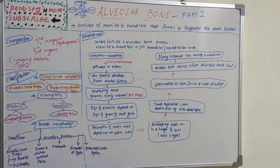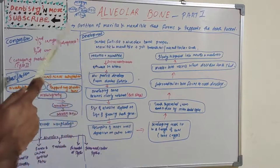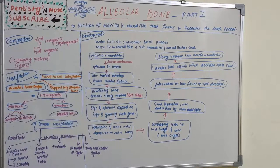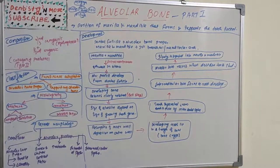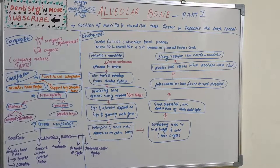Step by step: the maxilla and mandible develop intramembranously. At the 8th week in utero, the alveolar process develops from the dental follicle during tooth eruption. This is intramembranous development, and the dental follicle gives rise to the alveolar process during tooth eruption.